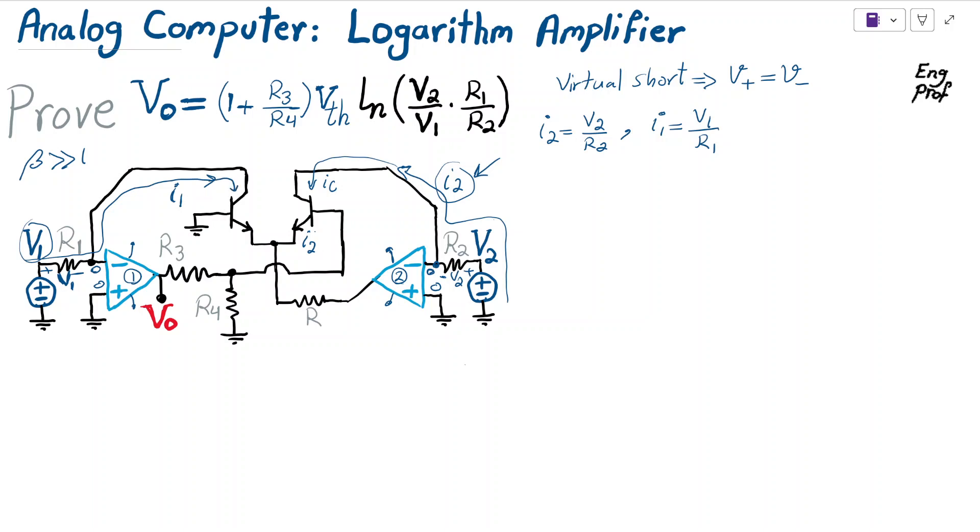The same thing applies to i1—i1 also goes out here. As a result, the sum of these two currents, i1 and i2, appears here passing through resistor R, going toward the output of op-amp number 2.